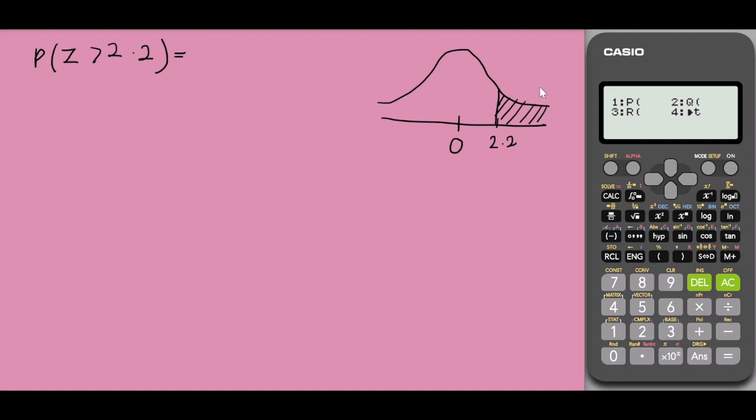So to find the area on our right-hand side directly from the calculator, we would choose 3 for R. So this is equals to R 2.2. So I'm selecting 3. Insert the value 2.2 equals to. That gives me the probability value.